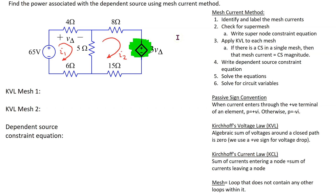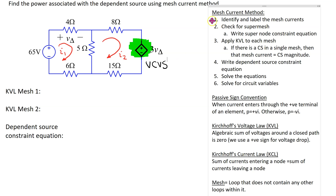In this video we will look at how to apply the mesh current method to solve a circuit containing a dependent source. The dependent source is highlighted here. We can see that there is a plus-minus inside the symbol, which denotes that this is a dependent voltage source. Its magnitude is in terms of a circuit voltage, so this means it is a voltage-controlled voltage source.